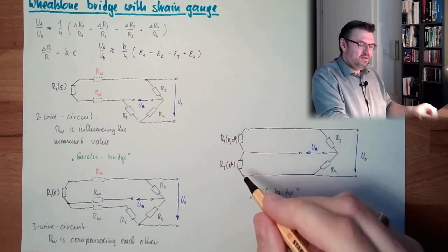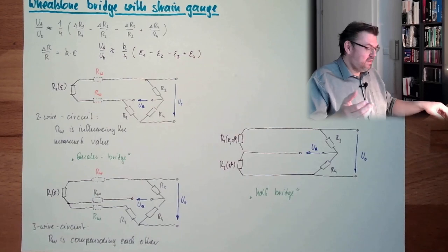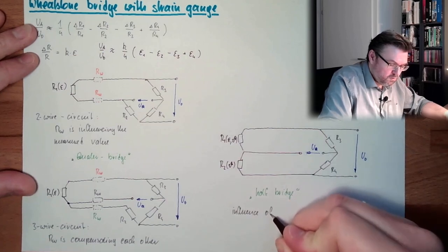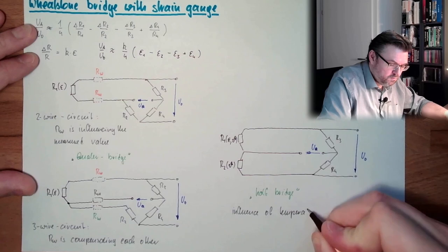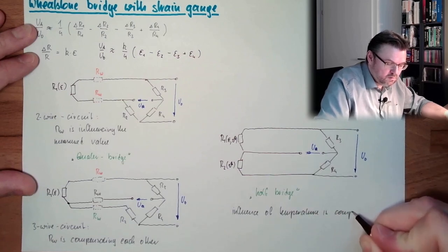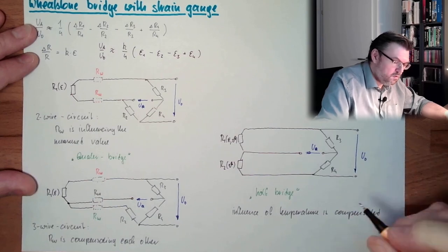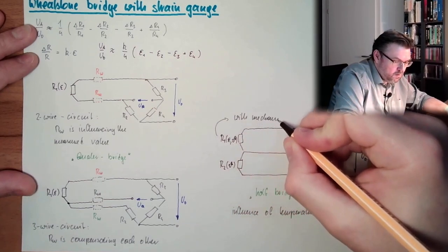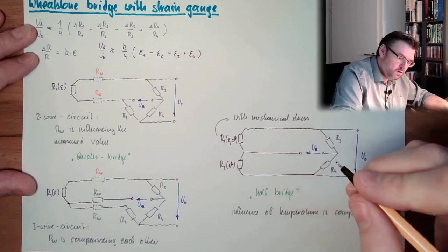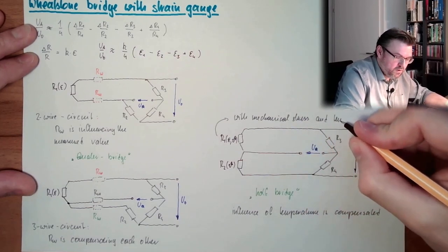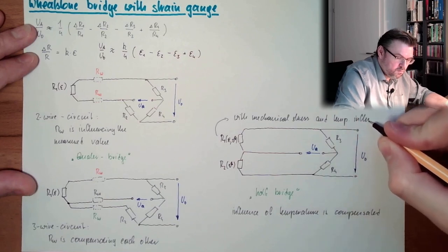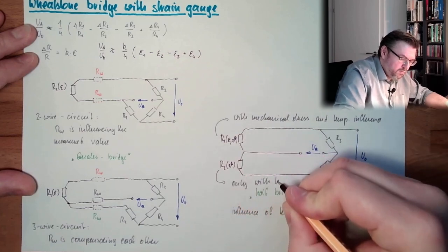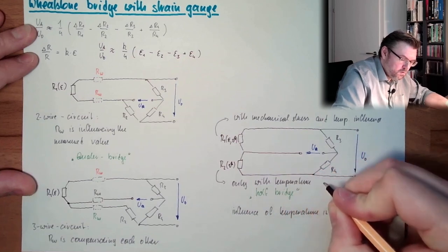One quarter of this half bridge is only there to compensate the influence of temperature. R1 has mechanical stress and temperature influence — this is what I want to measure. And R2 is only with temperature influence.